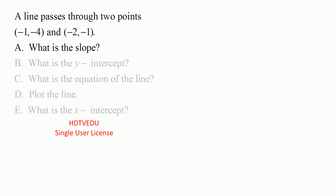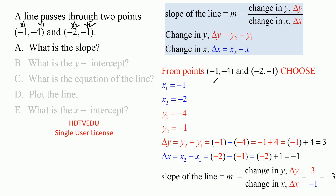What is the slope? That's part a. Let's label these as x1 y1 and x2 y2. If you are given two points, slope is m, which is change in y — delta y — over change in x — delta x. That is y2 minus y1 over x2 minus x1. Determine delta x as x2 minus x1, and determine delta y as y2 minus y1.